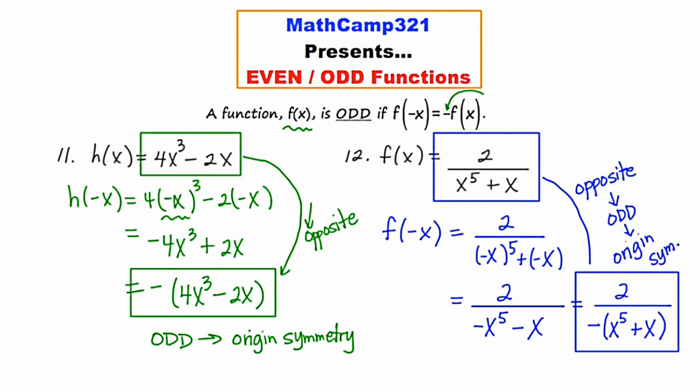So to figure out if a function is odd, you simply replace every occurrence of x with negative x and check to see that it ends up being the opposite of what you started with.